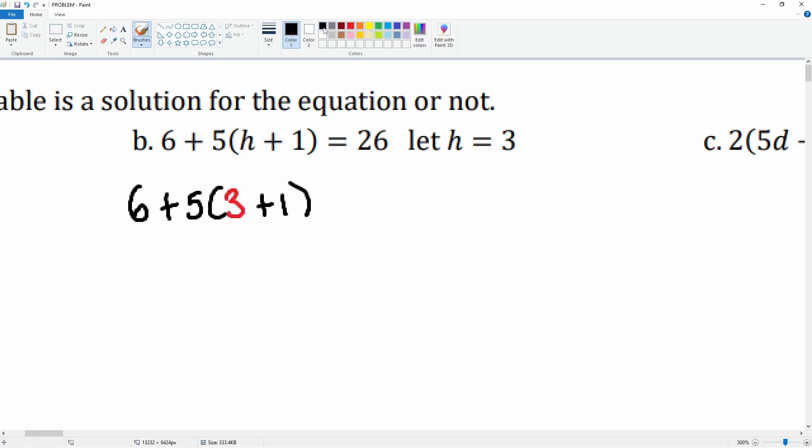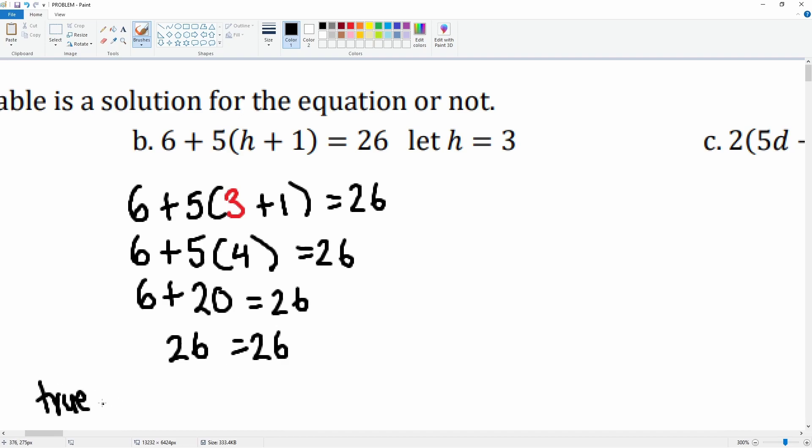Now let's combine some like terms. 6 plus 5 parenthesis, 3 plus 1 becomes 4. 5 times 4, which is 20. 6 plus 20, which would be 26. Oh, I forgot to write the 26 equals 26. Right? I forgot to carry that out. So it's 26 equals 26. This is true. So h equals 3 is a valid solution for this equation.